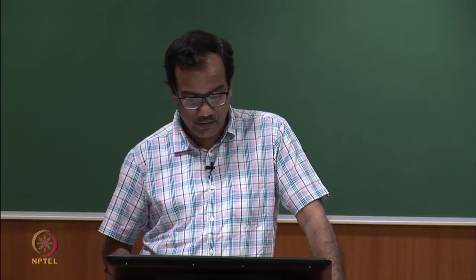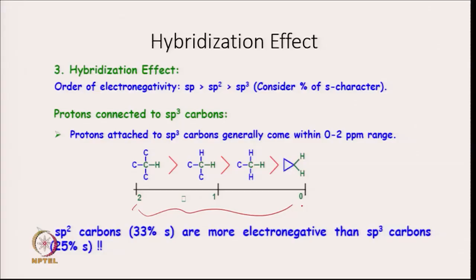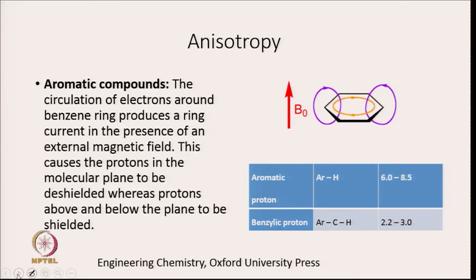When comparing SP2 and SP3 carbon: SP2 carbon is more electronegative than SP3, so a proton attached to SP2 carbon has its electrons withdrawn more strongly. However, the very high chemical shift values of aromatic protons cannot be explained based on electronegativity alone — they can only be explained on the basis of anisotropy.